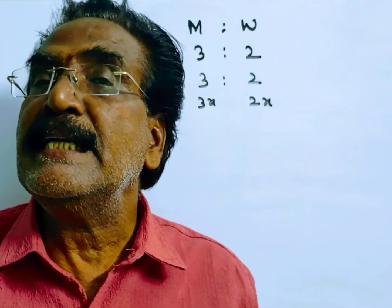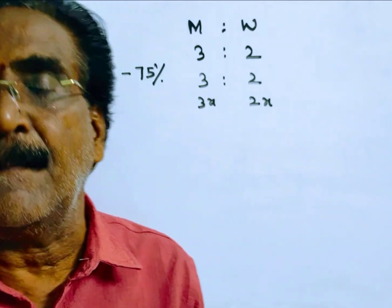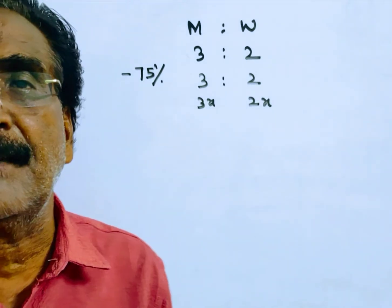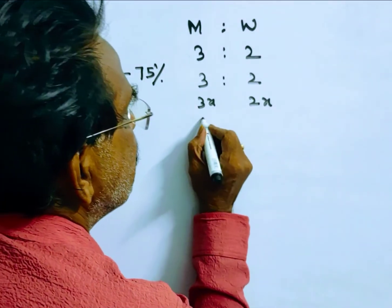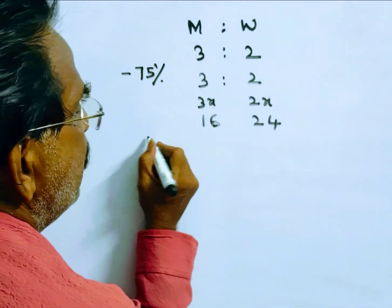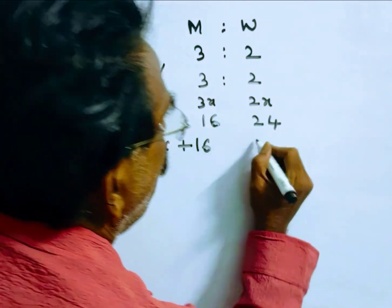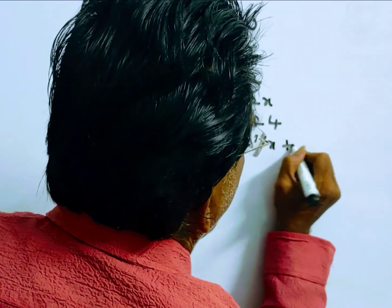Now 40 litres of mixture is added in which 40% is milk. Friends, 40% of 40 means 16 litres. So 16 litres of milk is added and the remaining 24 litres water is added. So now the milk is 3x plus 16, water is 2x plus 24.